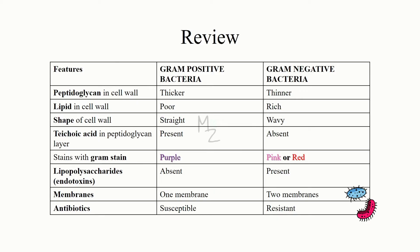As a quick recap: the peptidoglycan layer in gram positive bacteria is thicker compared to gram negative, which has a thin layer. Gram positive bacteria are lipid-poor while gram negative bacteria are lipid-rich. The gram positive cell wall is straight or smooth while gram negative has a wavy one. Teichoic acids are present in the peptidoglycan layer of gram positive bacteria but absent in gram negative. Gram positive bacteria stain purple with gram stain.